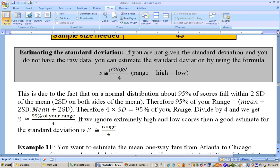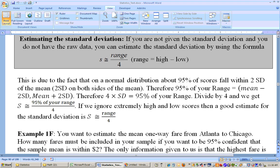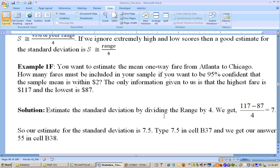Well, if they don't give you the sample standard deviation or the raw data to get the sample standard deviation, you can approximate the standard deviation by taking the range, which is your high minus your low, divided by 4. So let's say that last problem, that all we had was the high score and the low score. That's all we had. And the high score was 117, and the low score was an $87 air flight from Atlanta to Chicago.